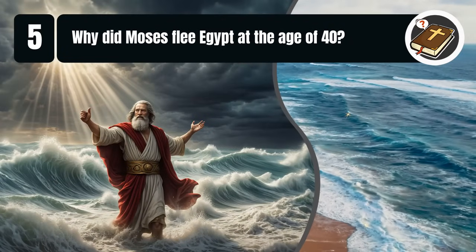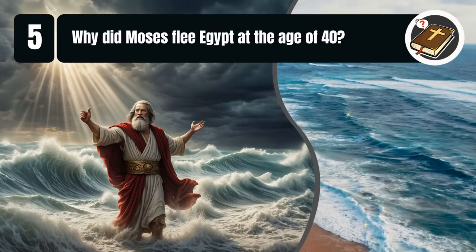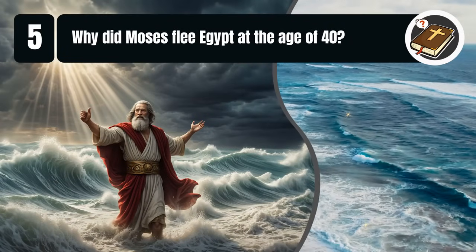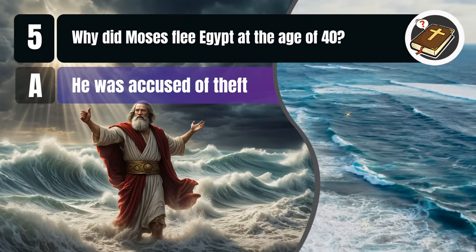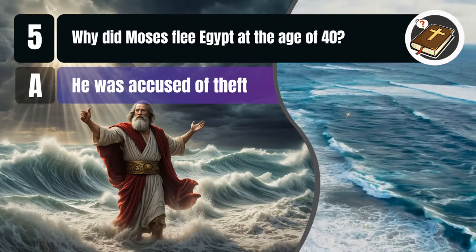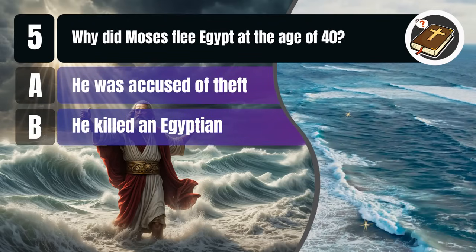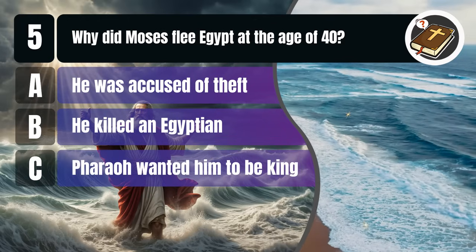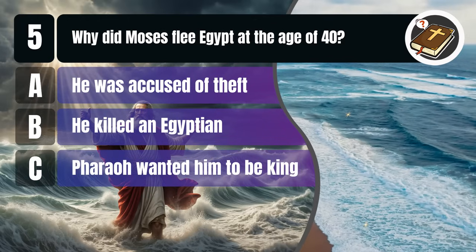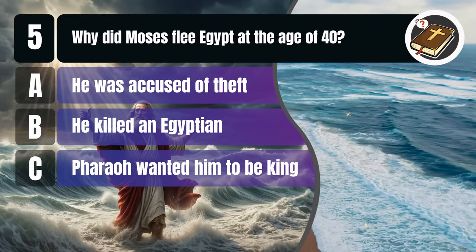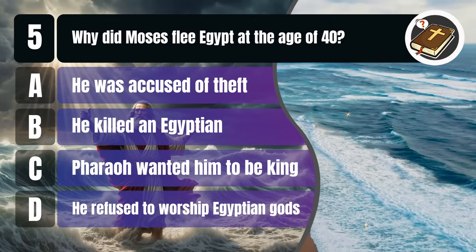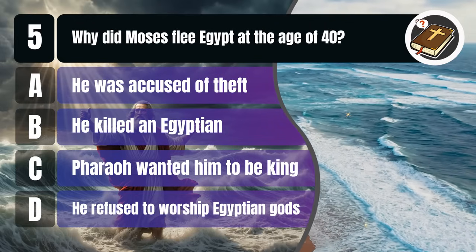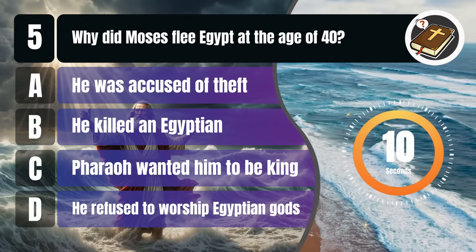Question 5. Why did Moses flee Egypt at the age of 40? A. He was accused of theft, B. He killed an Egyptian, C. Pharaoh wanted him to be king, D. He refused to worship Egyptian gods. You get 10 seconds.